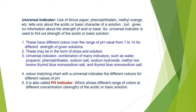Universal indicators: indicators like litmus paper, phenolphthalein, and methyl orange only tell us about the acidic or basic character of a solution, but give no information about the strength of the acid or base. A universal indicator is used to find out the strength of acidic and basic solutions. It shows different colors over a range of pH values and may be in the form of strips or in solution state.